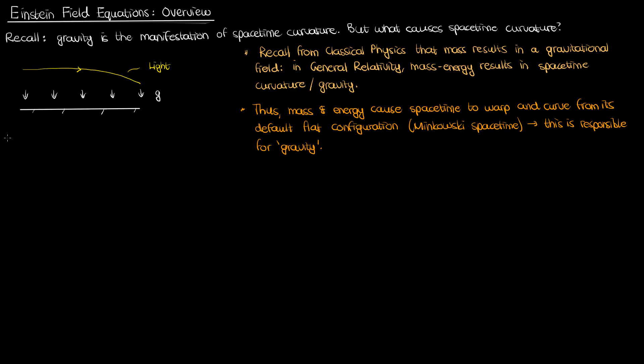This warping of spacetime is responsible for what we observe as gravity. So now we've established a link between mass, energy, and spacetime curvature. But is there a way we can describe quantitatively how an object with mass and or energy warps spacetime? For example, can we calculate what the geometry of spacetime looks like around a 1 kilogram mass? What about around a bigger mass like Earth or the Sun? The answer is yes, and the way to calculate that relationship between mass, energy, and spacetime curvature is to use the Einstein field equations.